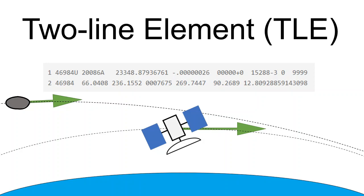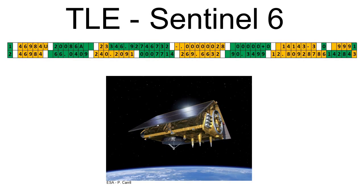Two-line element set is a standardized format used to describe the orbit of a satellite or space debris. They consist of a set of data arranged in two lines that includes important orbital parameters for a given point in time, the epoch. Let us have a look at a concrete example of a two-line element set for Sentinel-6 satellite.